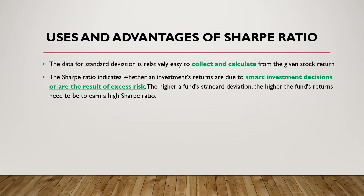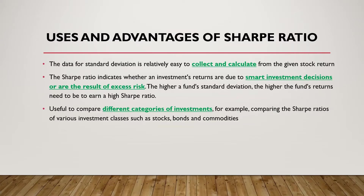Another advantage of the Sharpe ratio is that there are a lot of financial assets such as stocks, bonds, and commodities. What the Sharpe ratio can do is evaluate and compare any of these assets — whether it is a stock, a bond, or a commodity — based on the number that is calculated.